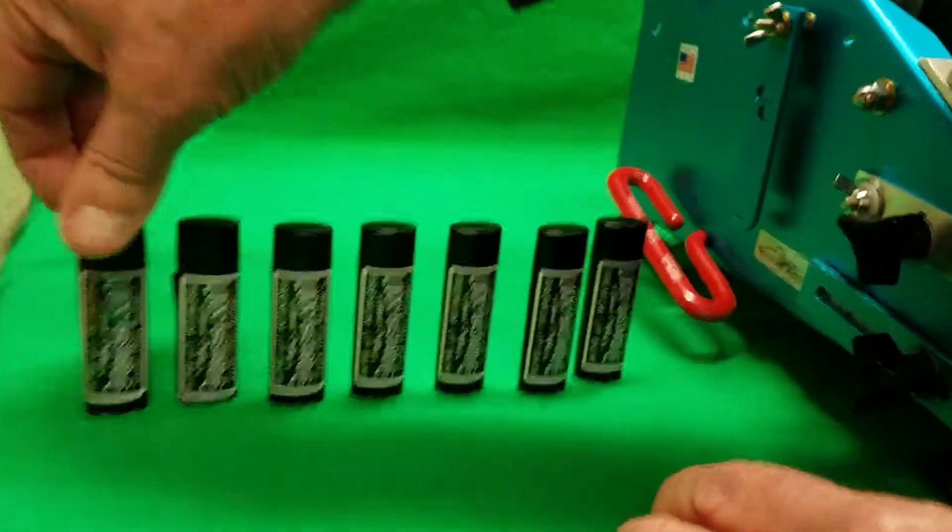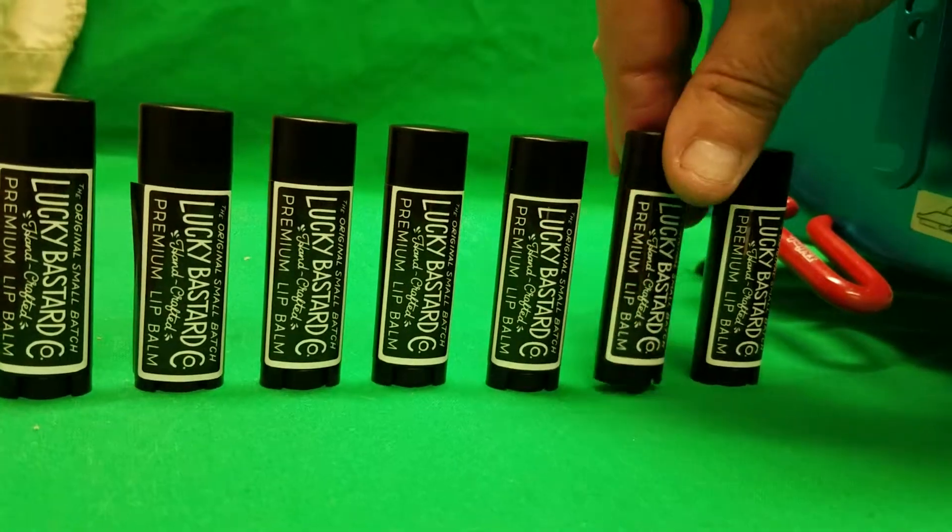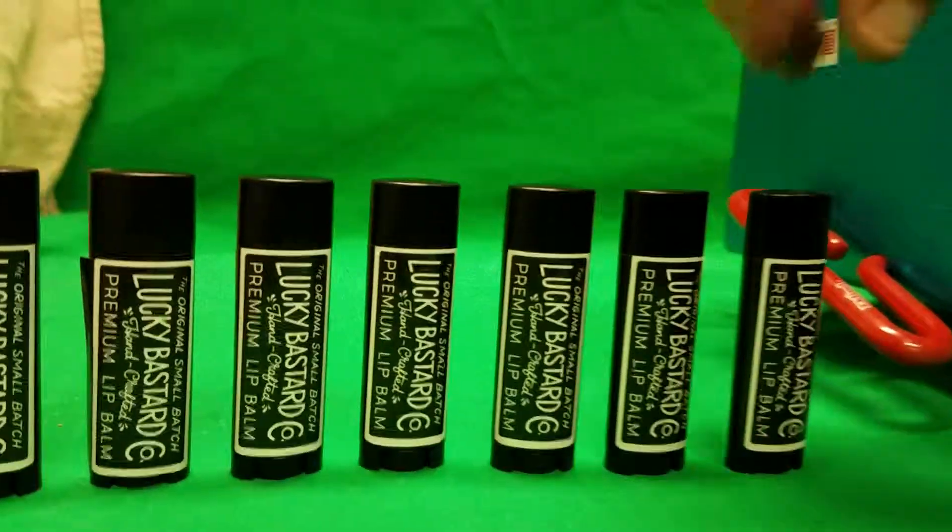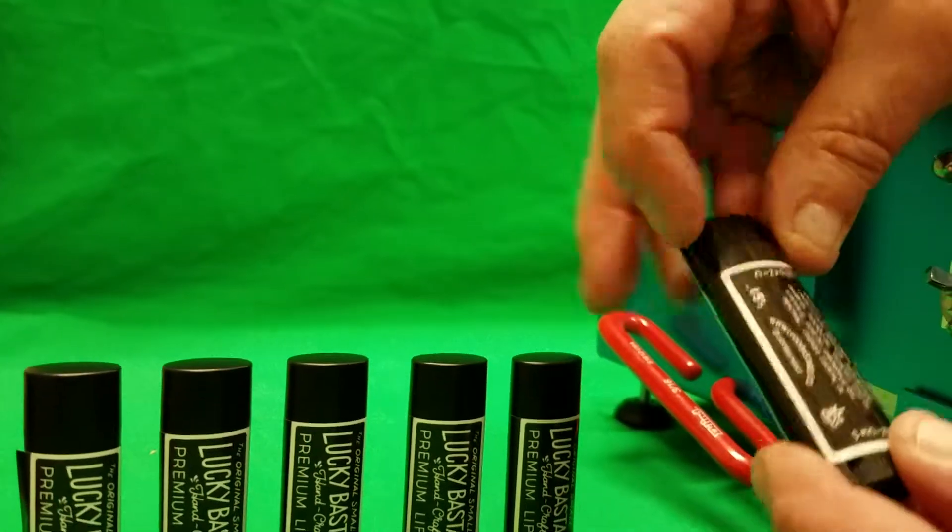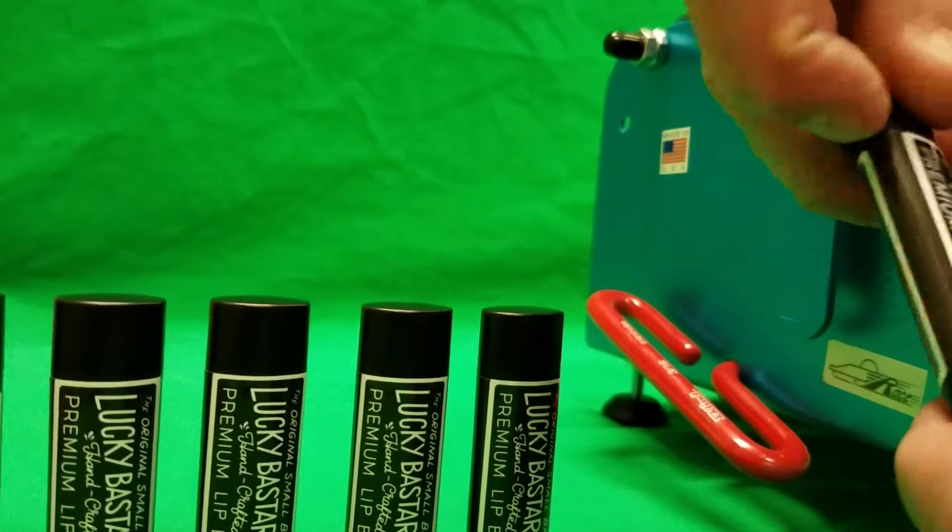And every label will be on the left side in the exact same position on the lip balm, and where the tamper evident tab is back here, that's right on the seam so that can be torn off.